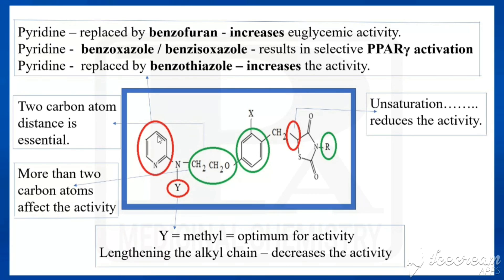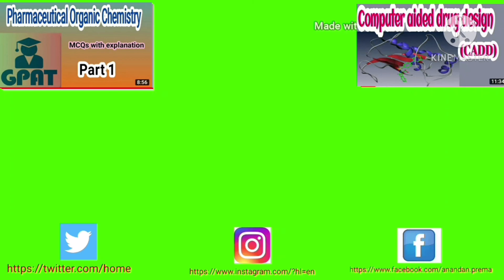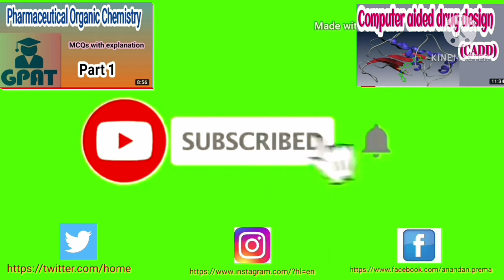We have pyridine here. If pyridine is replaced by benzofuran, the euglycemic activity would be increased. If pyridine is replaced by benzoxazole or benz-isoxazole, that results in selective PPAR-gamma activation. If pyridine is replaced by benzothiazole, the activity would be increased. That is all about the SAR of thiazolidinediones.